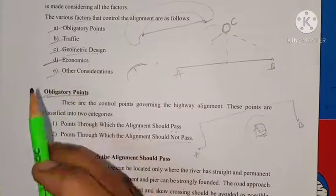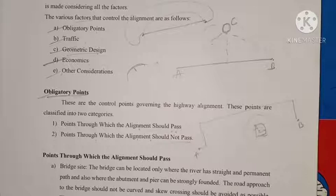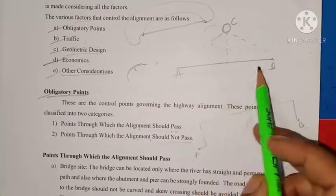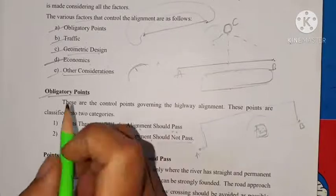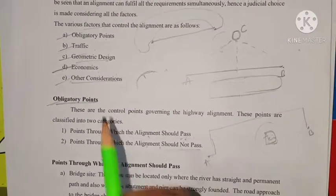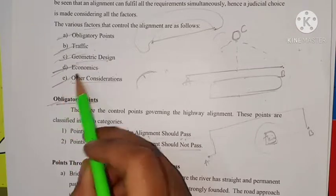Other considerations include drainage, rainfall data, maintenance, political considerations, seepage flow, water level, and soil data. When designing any road, drainage is also provided, so we must know the drainage capacity and soil conditions of the area. These fall under other considerations — the fifth factor controlling alignment.